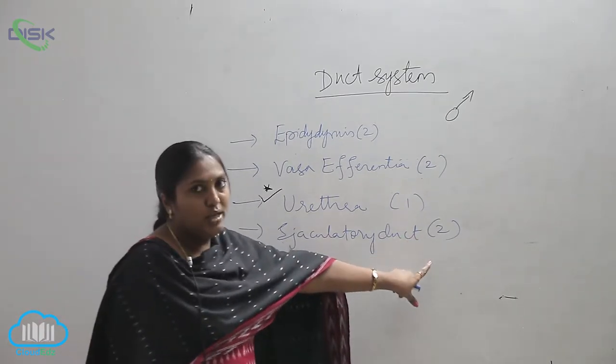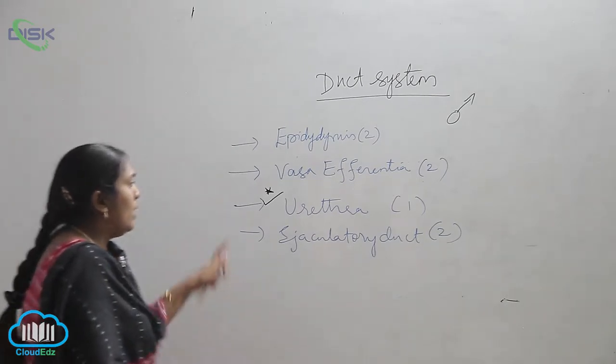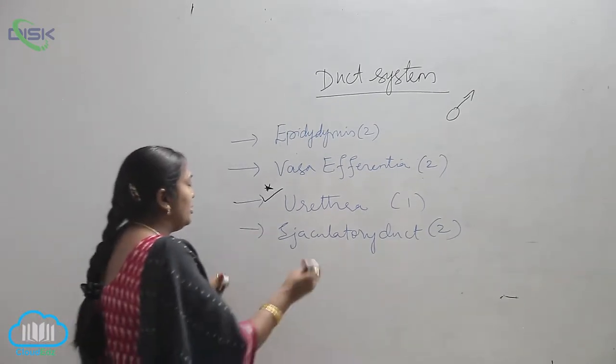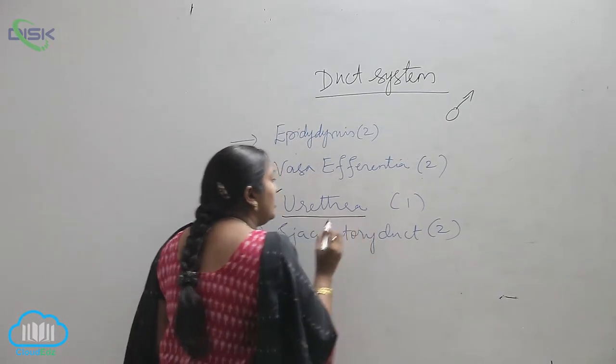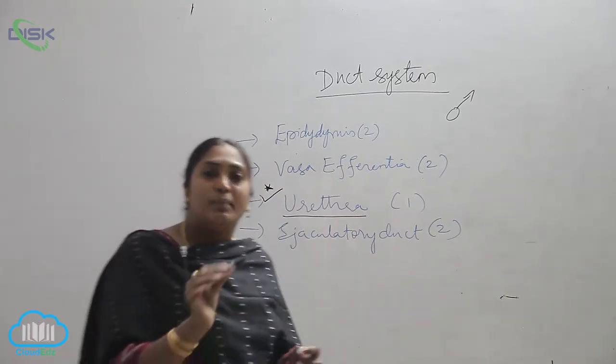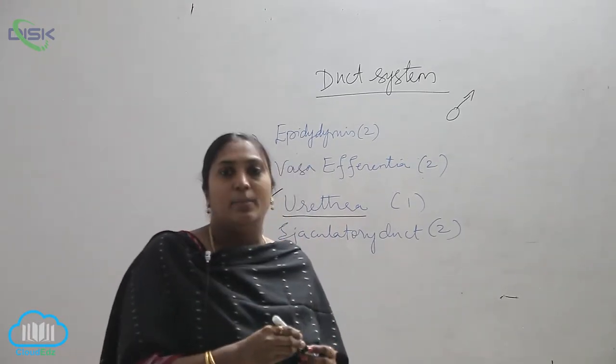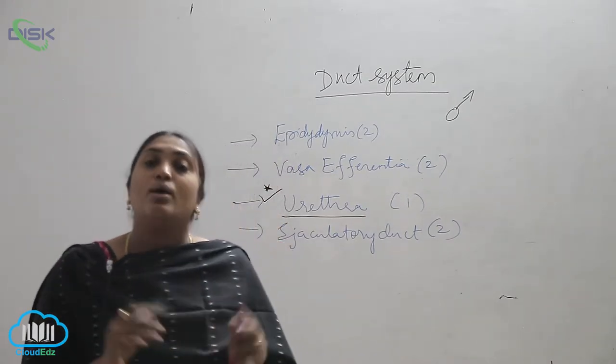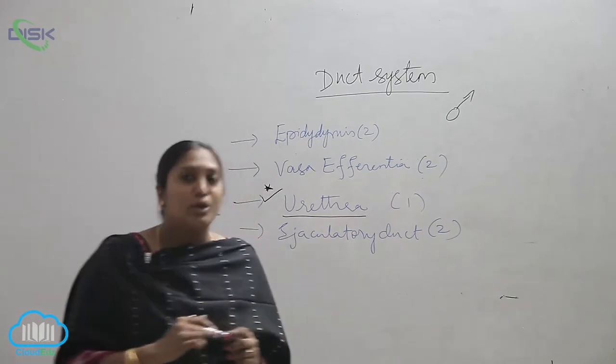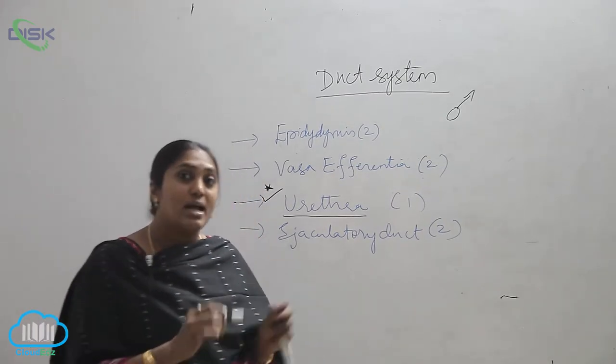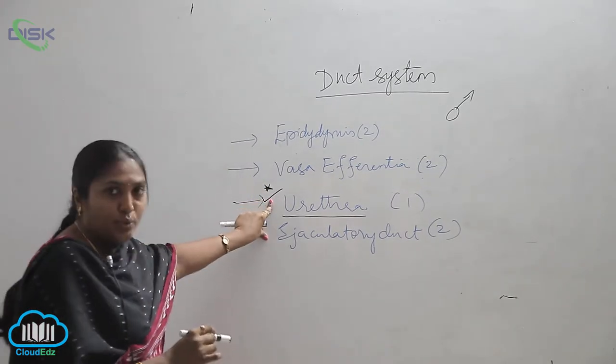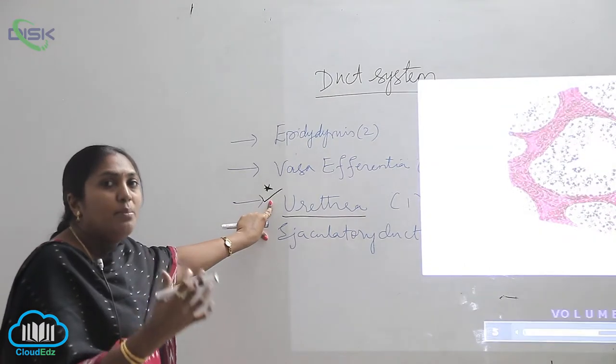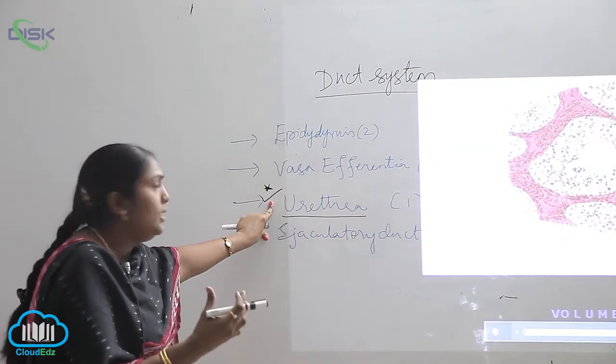Now why have I kept an important mark for urethra? Because the urethra is that part of the male reproductive system which is only one in number, helping only in the production of urine. That means the urine will be stored in this particular urethra.